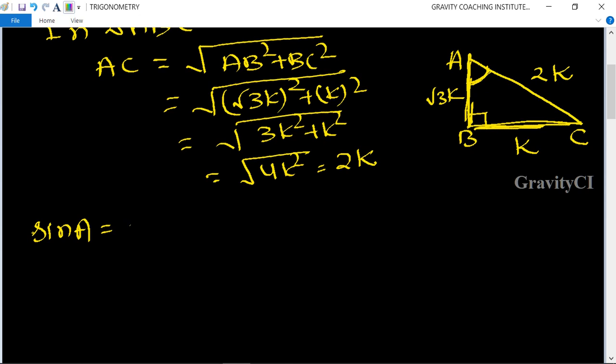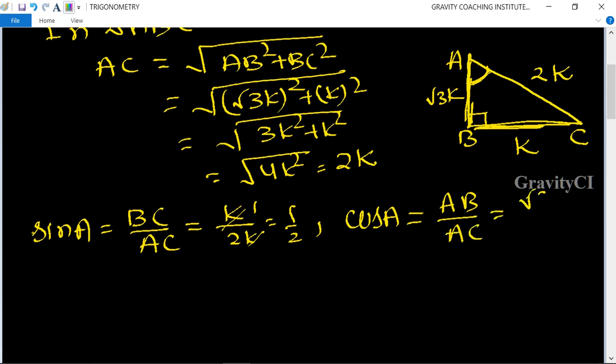So sin A is P upon H, then P will be BC upon AC. The value of BC is k and AC is 2k, so k cancels, giving 1 upon 2. For cos A, it's base upon hypotenuse, so base is AB and hypotenuse is AC. This equals root 3k upon 2k, which gives root 3 upon 2.